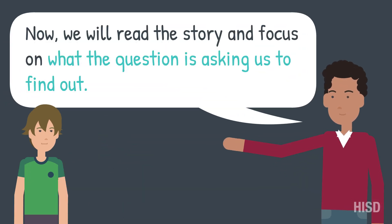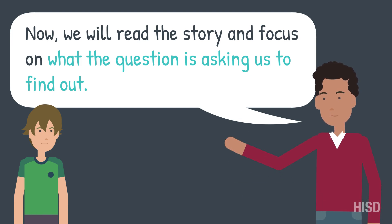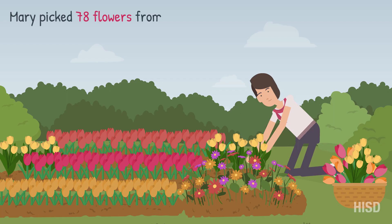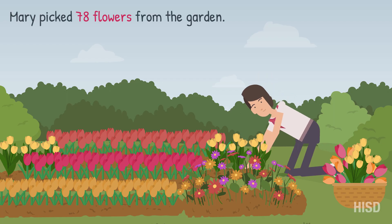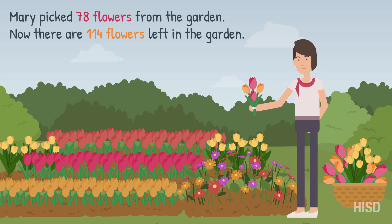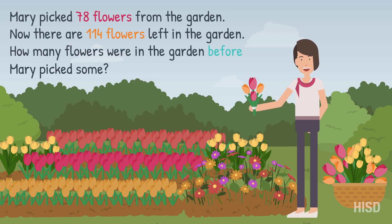Now we will read the story and focus on what the question is asking us to find out. Mary picked 78 flowers from the garden. Now there are 114 flowers left in the garden. How many flowers were in the garden before Mary picked some?